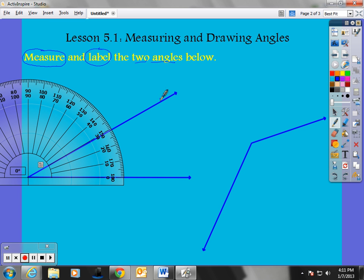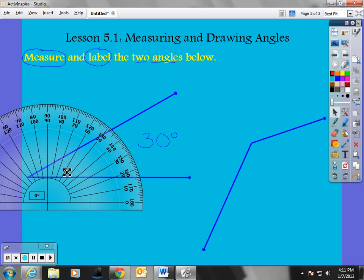And I could tell right here this angle is an acute angle. Meaning, it's less than 90 degrees but greater than zero. Now, because this is lined up at zero, I can count by tens. 10, 20, 30. So, this angle would measure 30 degrees. Now, I've measured it but I also want to label it.